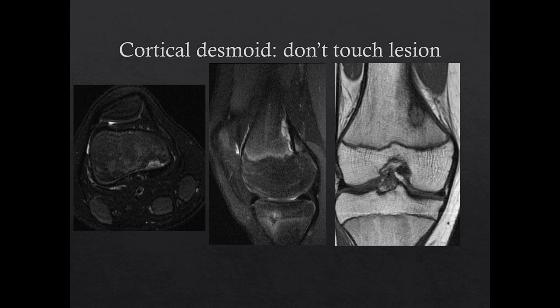Another variant seen at the knee is the equivalent of the cortical desmoid lesion seen by plain film, also called distal femoral cortical irregularity or avulsive cortical irregularity. It is at the site of attachment of the medial head of the gastrocnemius or adductor magnus tendon. It should be recognized based on its classic medial posterior location along the distal femoral metaphysis. It is subcortical and may have an ovoid shape on coronal images. Most of the time, this is an incidental finding.